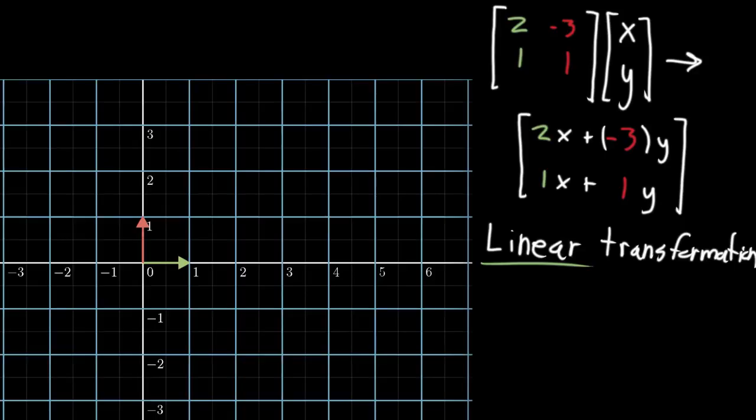The green vector is 1, 0. 1 in the x direction, 0 in the y direction. And then that red vertical vector here is 0, 1. Right? 0, 1.